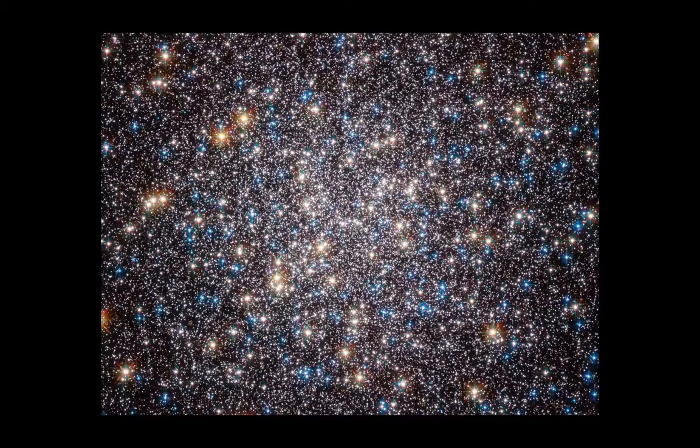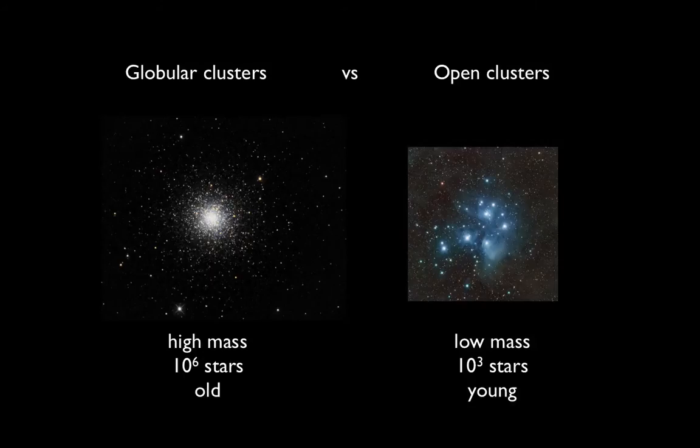Globular clusters are somewhat mysterious objects. Astronomers are still trying to figure out exactly how they form. We'll talk more about them in future classes. But the main differences here between globular clusters and open clusters, to recap, is that globular clusters are much higher mass. They have almost a million stars in them, and they're much older, whereas open clusters tend to have low masses, fewer stars in them, and tend to be much younger, so that the stars in them are much younger and also can be more massive and hotter.